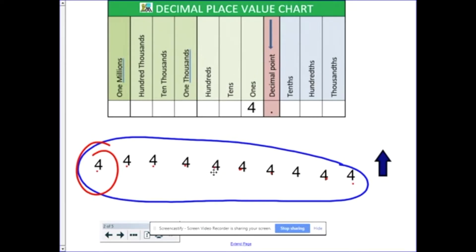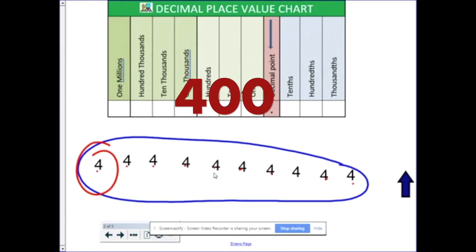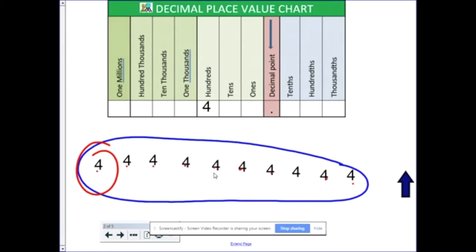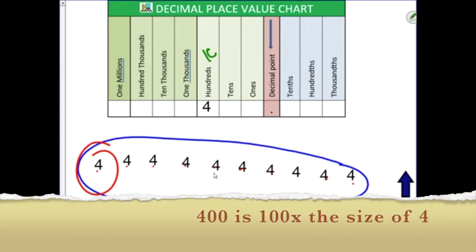Similarly, if I were to write out 100 4s in a row and add them all together, I would end up with 400. So I would need 100 4s to make 400, showing that this is 100 times larger.